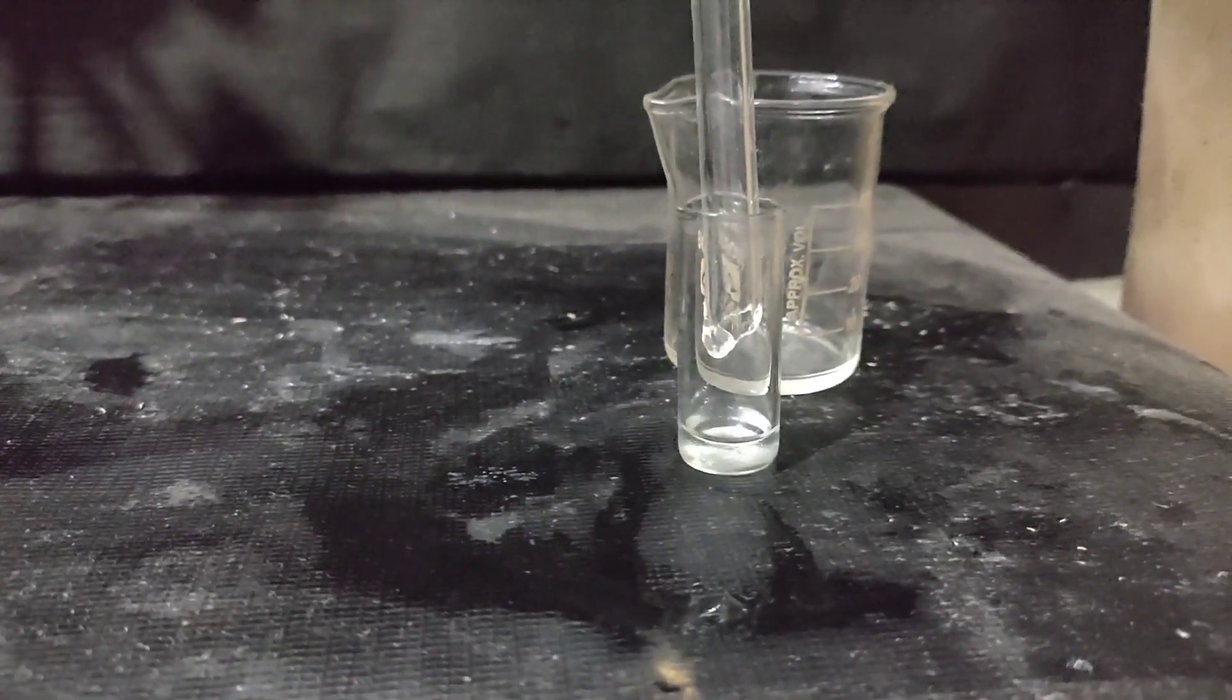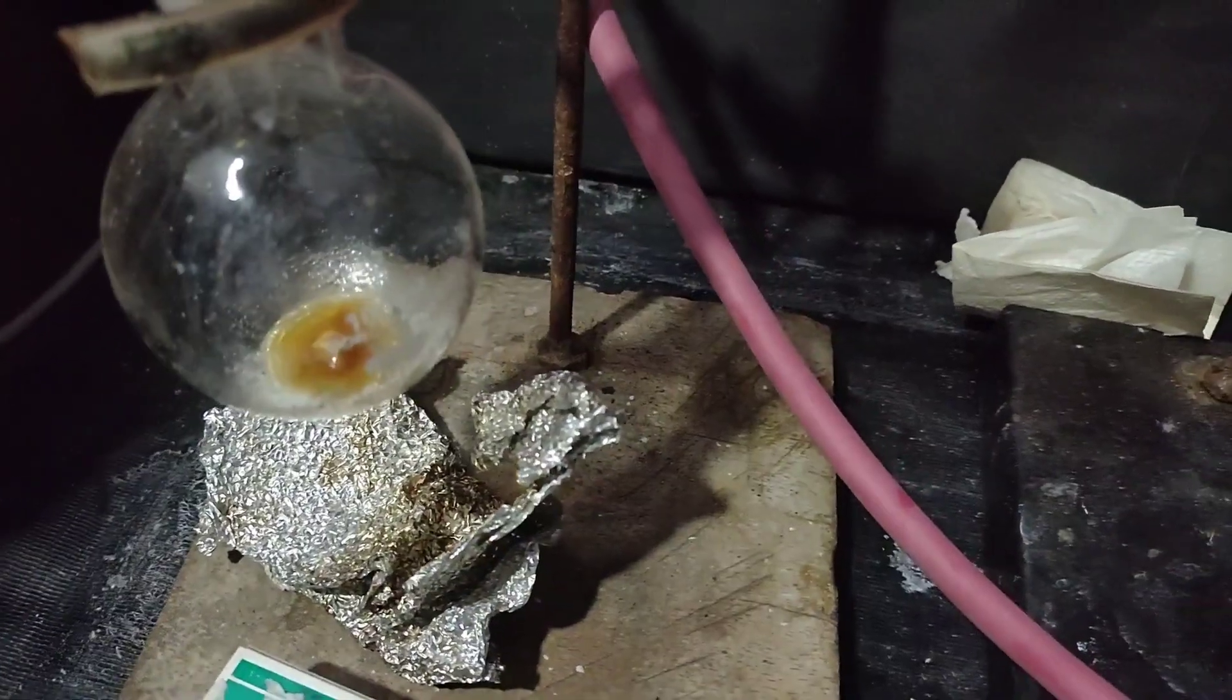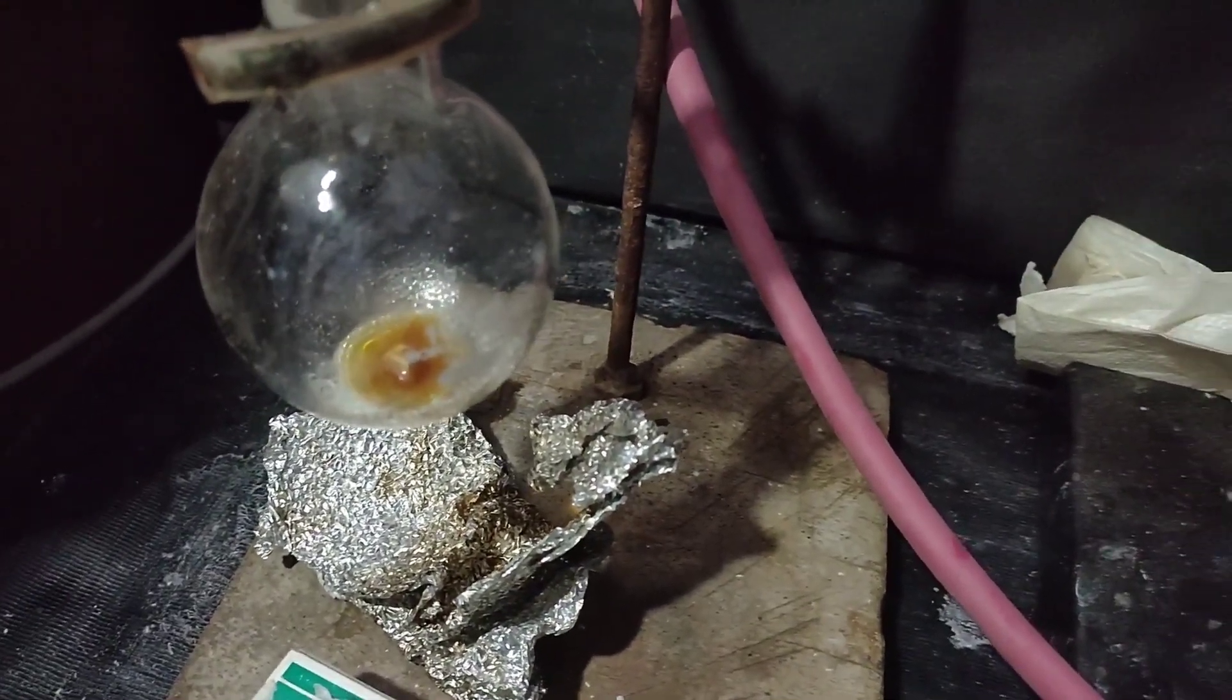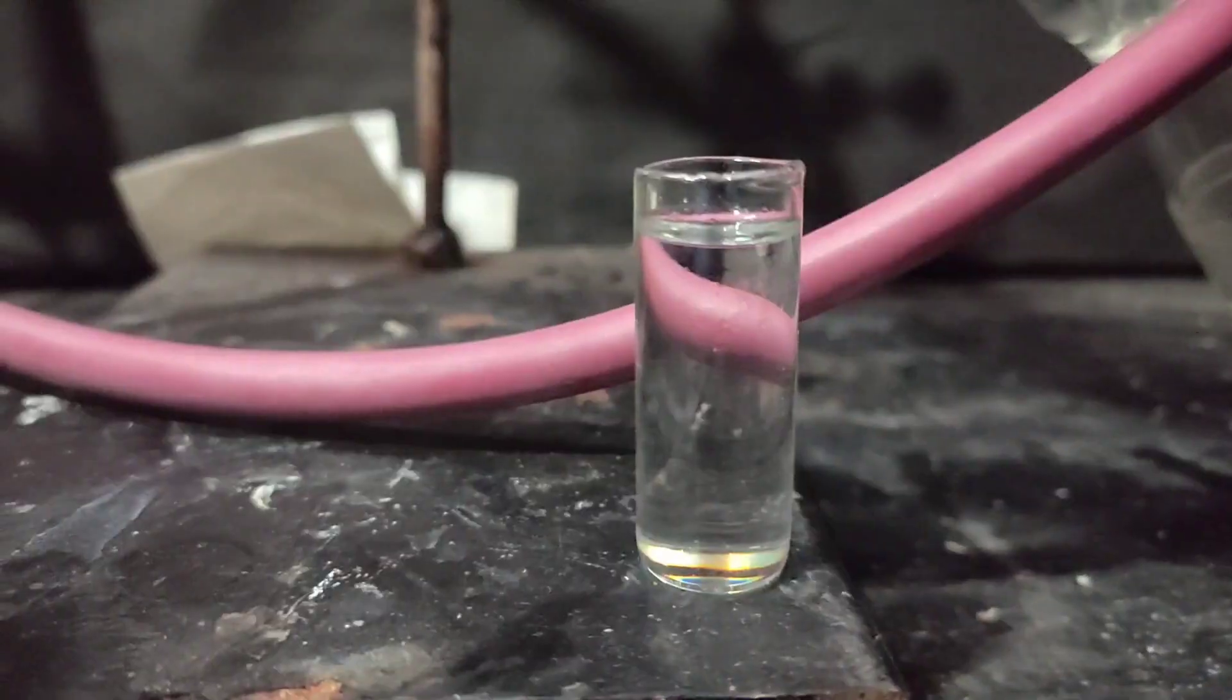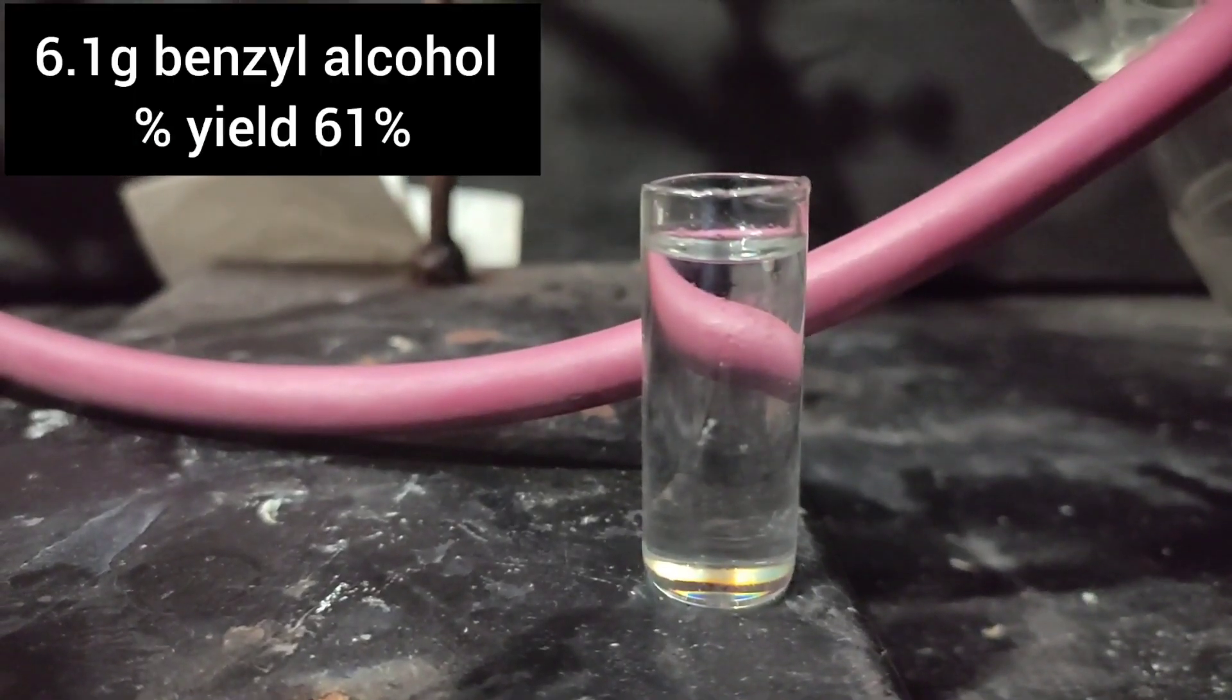When very little liquid remained in the flask, nothing came over. So I stopped heating. 6.1 grams of benzyl alcohol was obtained which corresponds to a percentage yield of 61%.